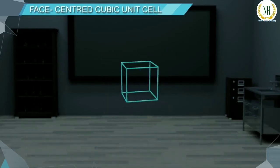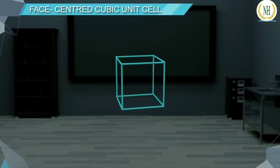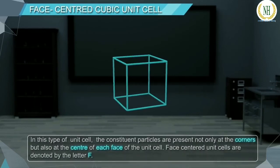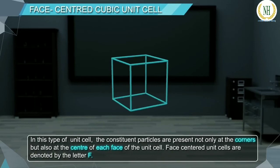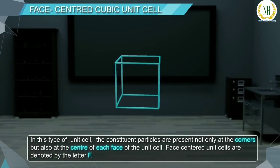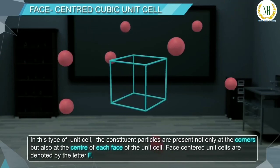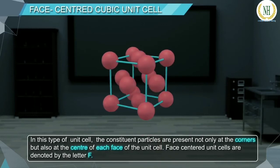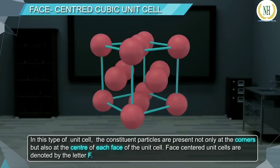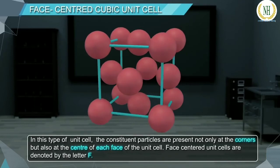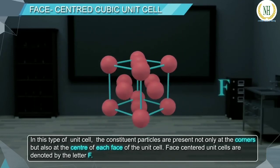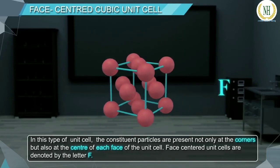Face Centered Unit Cell: In this type of unit cell, the constituent particles are present not only at the corners but also at the center of each face of the unit cell. Face Centered Unit Cells are denoted by the letter F.